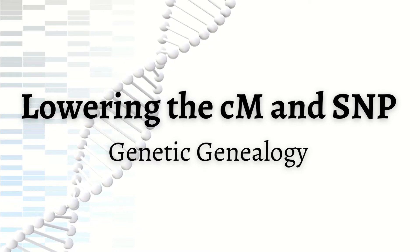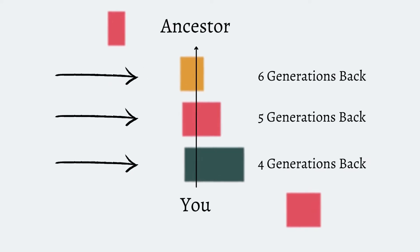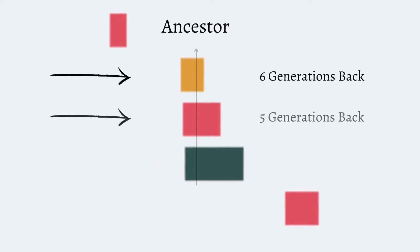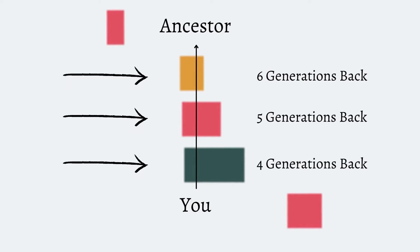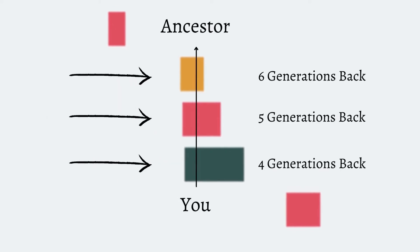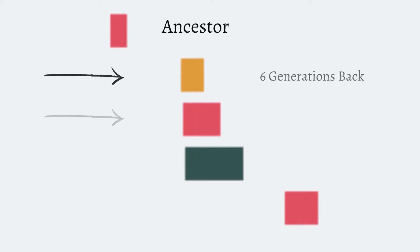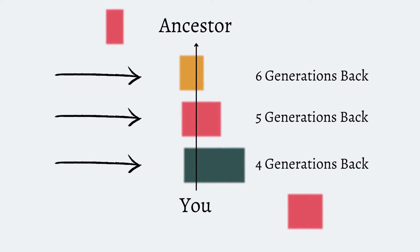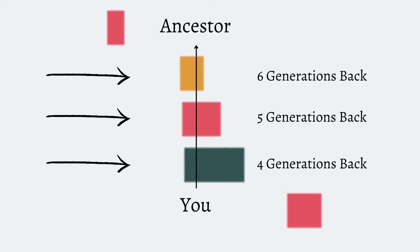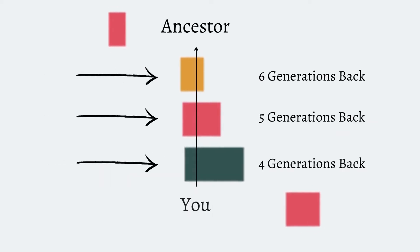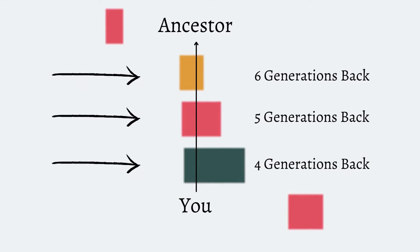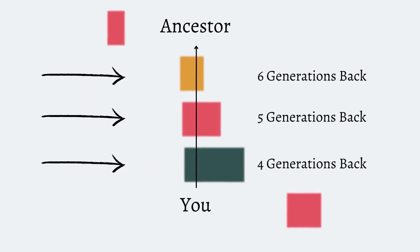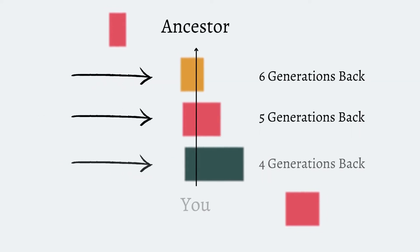So when is it okay to lower the centimorgan threshold? First, you're going to want to have a firm understanding of the concepts we just discussed — period. There are a lot of variables and they cannot be ignored. Second, it is highly recommended that you first build out a chromosome map. This will allow you to make sense of the segments no matter what centimorgan threshold you're using. A chromosome map is a tool — use it. When you're first building out a chromosome map, you really should use the standard centimorgan thresholds, then you can apply the lower centimorgans. For projects dealing with ancestors roughly 10 to 15 generations back, maybe more, we can lower the centimorgan threshold, but you need to use a chromosome map as a guide. This will verify the branch for the ancestor.